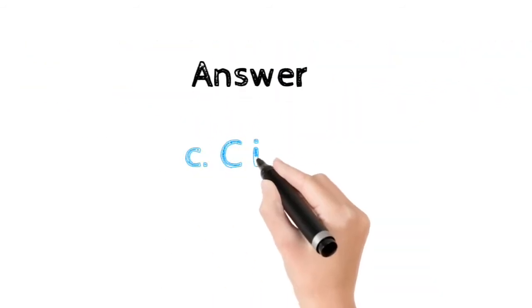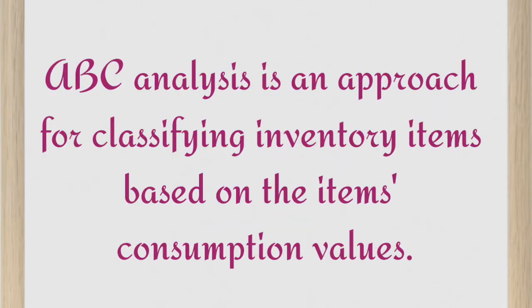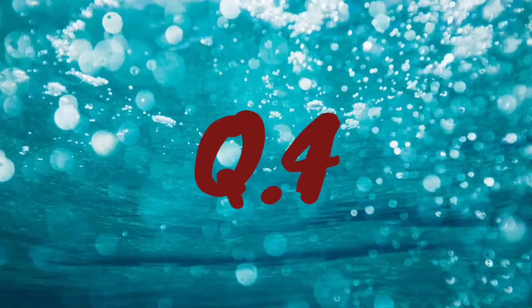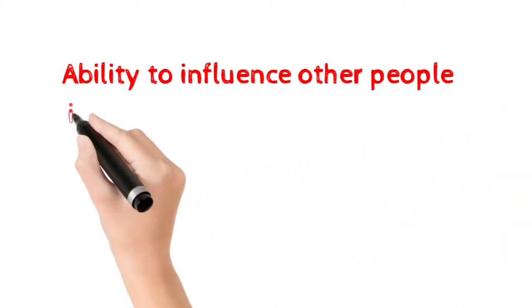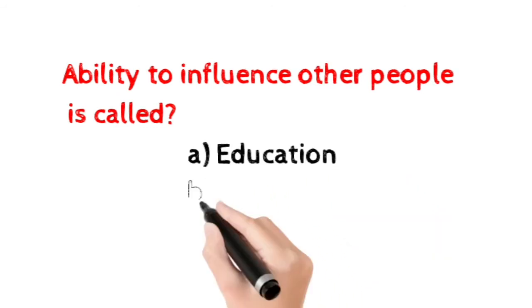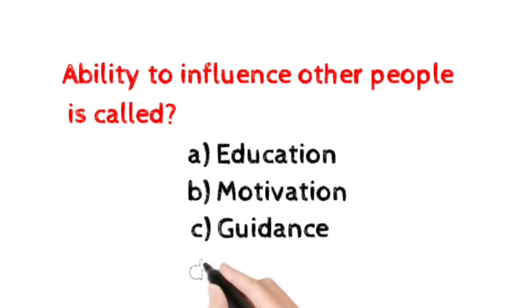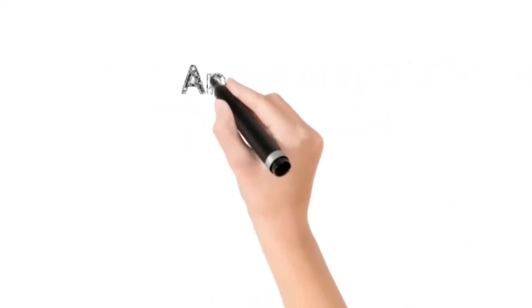Number four: Ability to influence other people is called? Option A: education. Option B: motivation. Option C: guidance. Option D: leadership. Here the correct answer is option D, leadership.